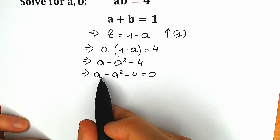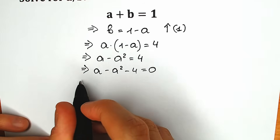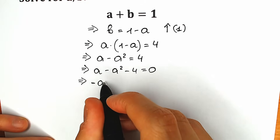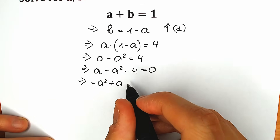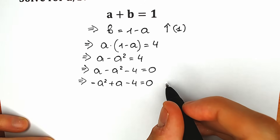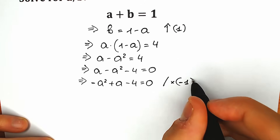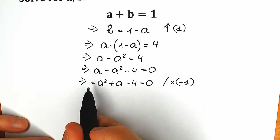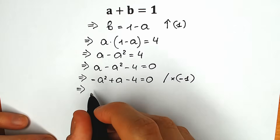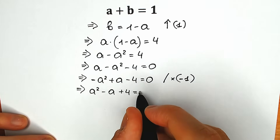This is a quadratic equation but we need to rearrange it because we prefer a² in the first position. So rearranging, we have minus a² plus a minus 4 equals 0. Our last tricky move: we multiply both sides by minus 1, which changes all signs. As a result we have a² minus a plus 4 equals 0.